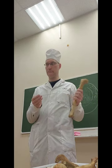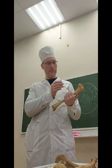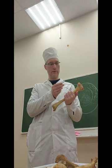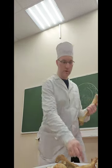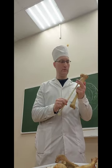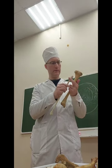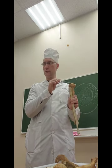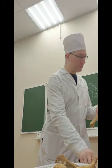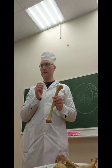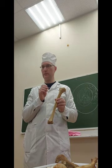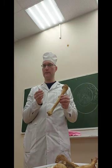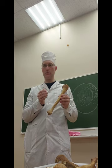Laterally we have one more articular surface for another bone — for fibula. Fibula doesn't take part in the knee joint. What is apophysis? Here is tuberosity — tuberositas tibiae. Behind, we have a line for the soleus muscle — linea musculi solei.